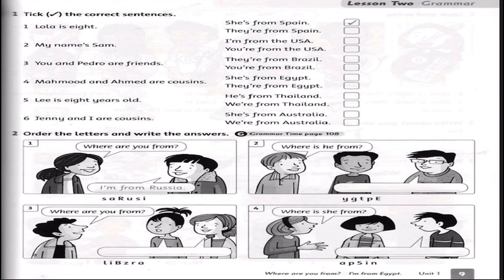For example, Lee is eight years old, he is from Thailand. We have to look at the subject. If it is Muhammad and Ahmad, if it is Lee, if it is Jenny and I, if it is my name — we will answer in that way. For a boy we use 'he', a girl 'she', two people 'they', and for I we use 'am'.